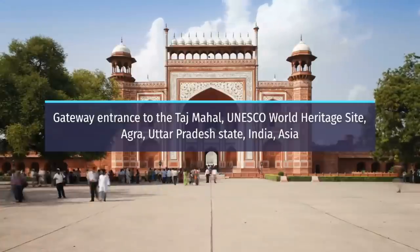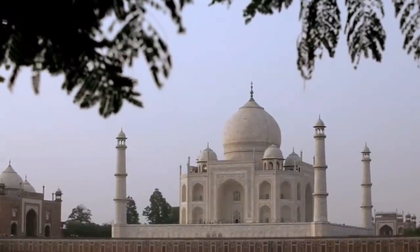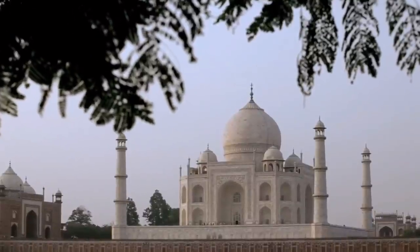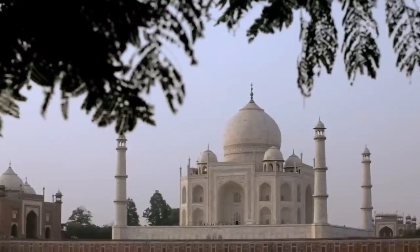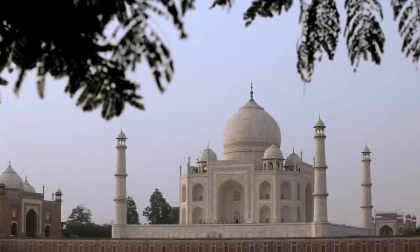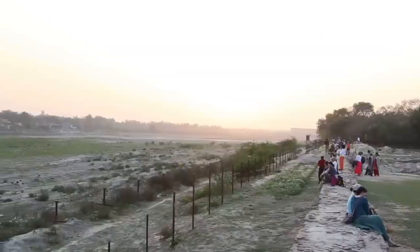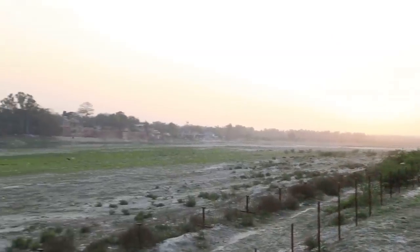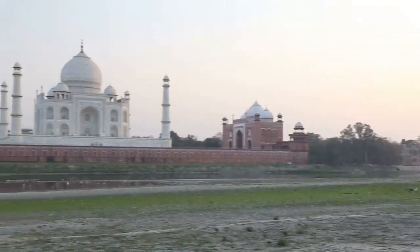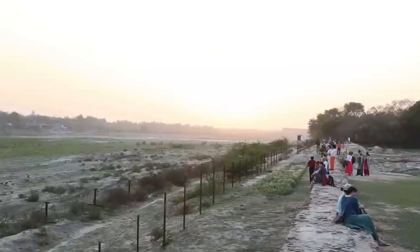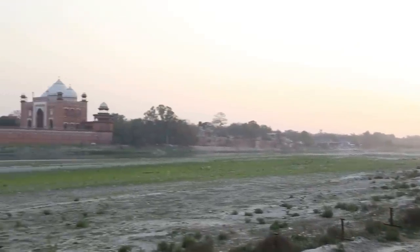The Taj Mahal was designated as a UNESCO World Heritage Site in 1983 for being the jewel of Muslim art in India and one of the universally admired masterpieces of the world's heritage. It is regarded by many as the best example of Mughal architecture and a symbol of India's rich history. The Taj Mahal attracts 7 to 8 million visitors a year and in 2007, it was declared a winner of the New Seven Wonders of the World initiative.